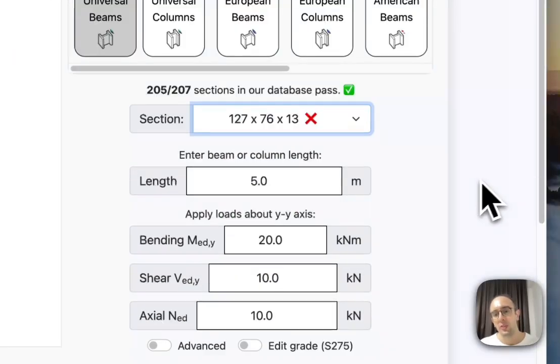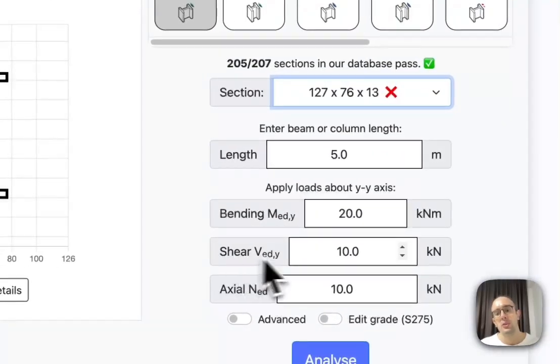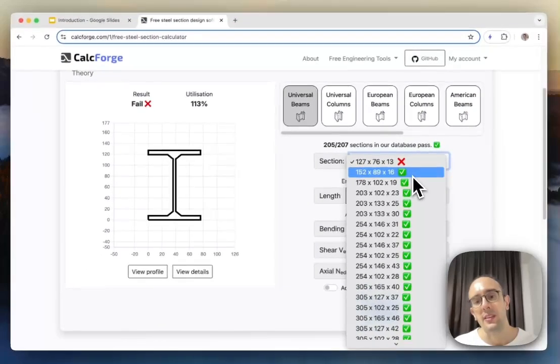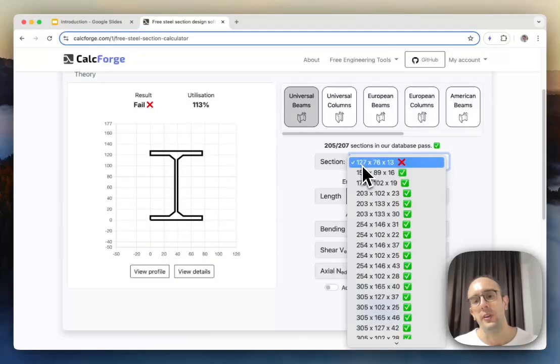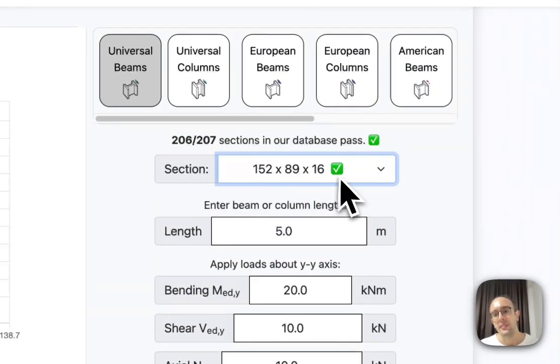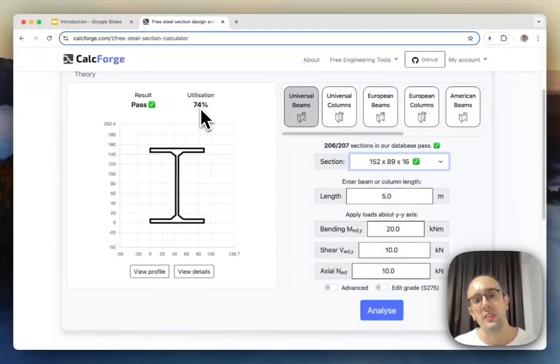And then basically we've already preloaded here all of the different section sizes. And for these input loads, so your input bending moment, your input shear, your input axial forces, we're actually calculating that for all of these different section sizes, so you'll see here they're in order, so this is the smallest section size for universal beams, the smallest common section size which is 127, but if I select here 152, you'll see here that this is actually passing, so it's 74% utilized.